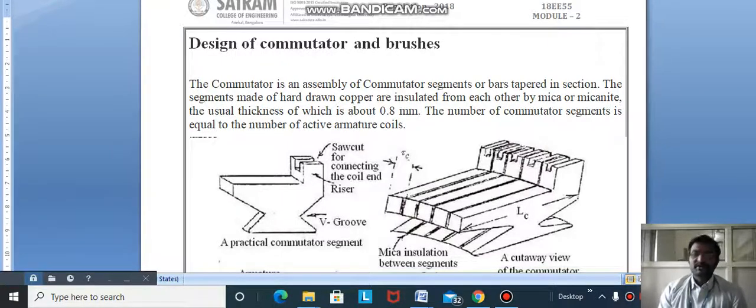Hi to all, in this video we're going to see about design of commutator and brushes of a DC machine. The commutator is an assembly of commutator segments or bars tapered in section. The segments are made of hard drawn copper and insulated from each other by mica or micanite. The usual thickness is about 0.8 mm.